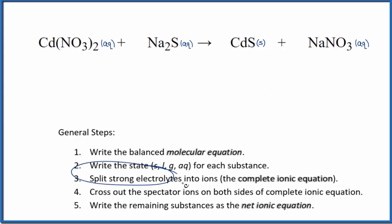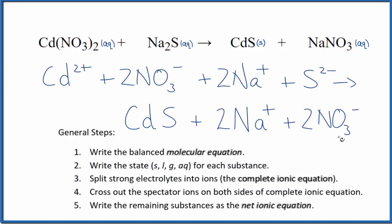Now we can split the strong electrolytes into ions for the complete ionic equation. And that looks like this. So this is the complete ionic equation. Note that we don't split solids apart in net ionic equations. So the CdS, the cadmium sulfide, that stayed together. We split all the other stuff apart since it's a strong electrolyte.